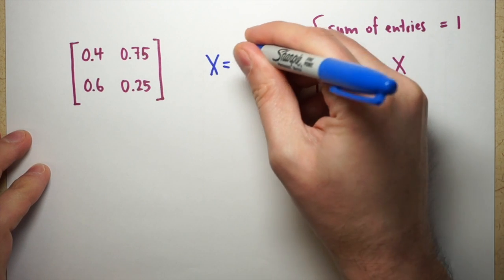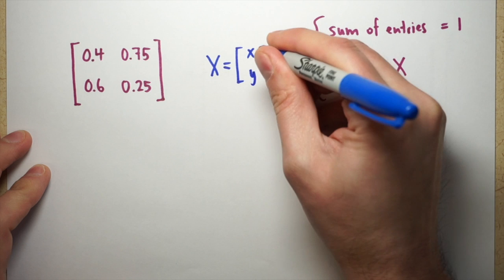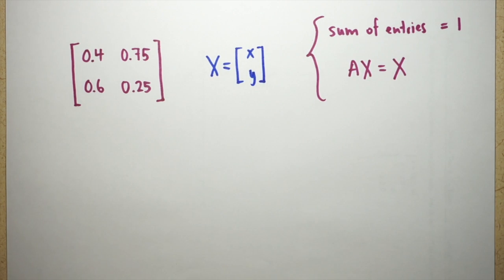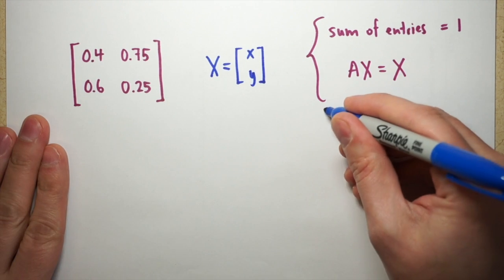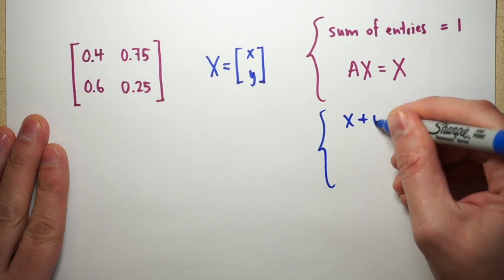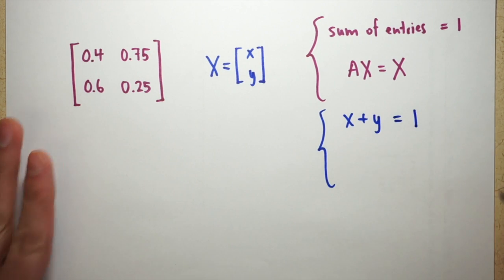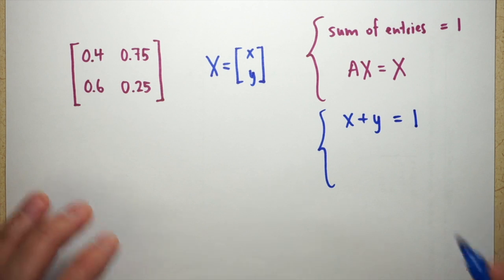So we're looking for an x that looks like, well it's going to be two entries, and it's going to be x, y. That's what we'll call it. The sum of the entries equaling 1 just means that x plus y has to equal 1. That will make it a distribution.